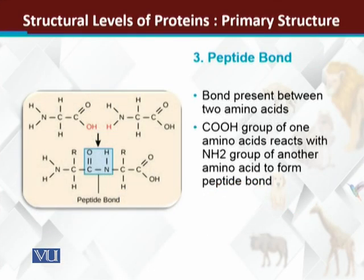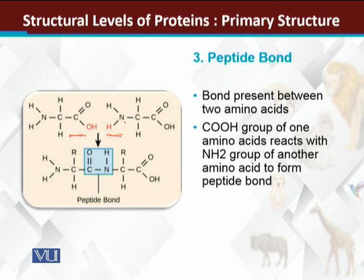All the amino acids in a polypeptide chain — in the primary structure of the protein — are linked through peptide bonds. A peptide bond is a covalent linkage between two amino acids: the carboxyl group of one amino acid reacts with the amino group of the next amino acid. A water molecule is released — the hydroxyl and hydrogen form the water molecule — and the carboxyl carbon and amino nitrogen are linked through a covalent bond. This covalent bond is the peptide bond.